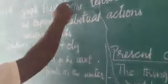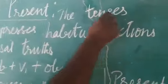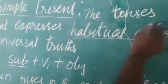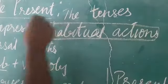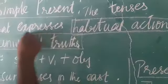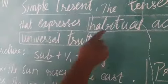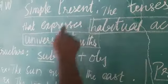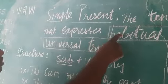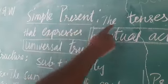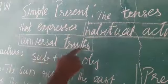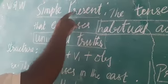Simple present tense means that tense that expresses habitual actions. Habitual means what we do in our daily life — that is called a habitual action. The other one is universal truths, which also comes under simple present tense. So habitual action sentences and universal truths — these two sentences come under simple present tense.